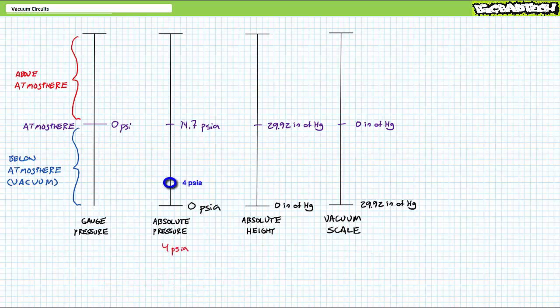We can also perform these conversions in reverse. Let's say we've got an absolute pressure of 4 PSI absolute. I want to express this less atmospheric condition using the vacuum scale. Absolute pressure to absolute height is a simple unit conversion, where again 14.7 PSI absolute is equal to 30 inches, 29.92 inches to be exact.